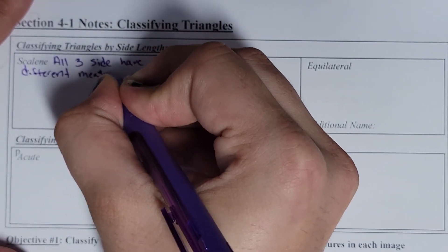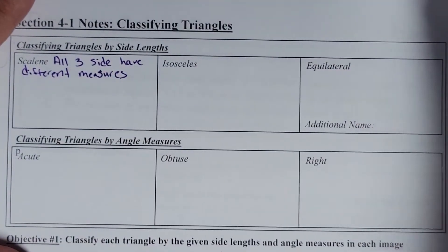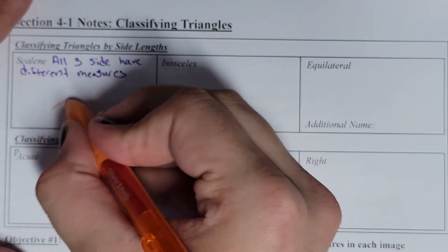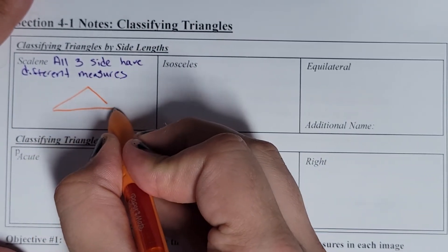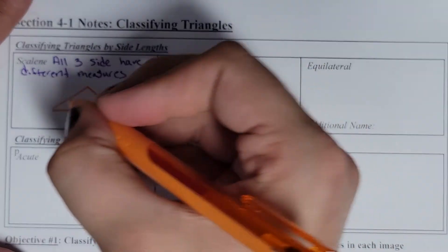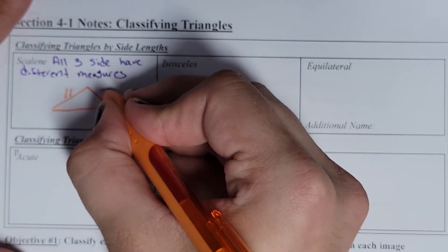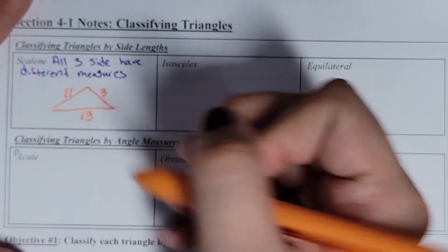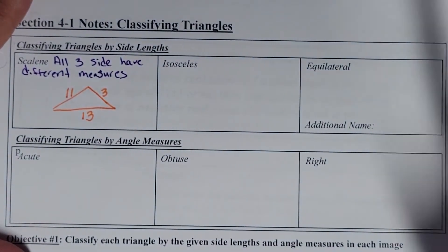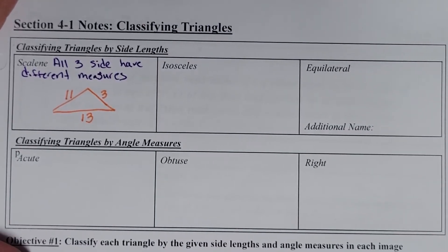Every side is going to be a different number. There's a little space here for you to go ahead and draw a picture of what this might look like. I'm going to sketch something and put some numbers here — let's say this was 11, maybe this was 3, and this was 13 units long. Here we can see that all three sides have a different measure, making it a scalene triangle.